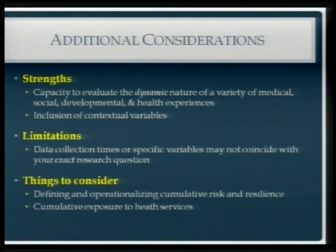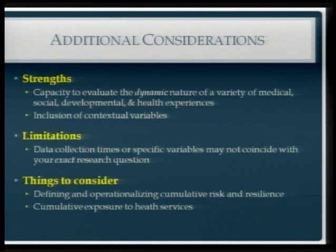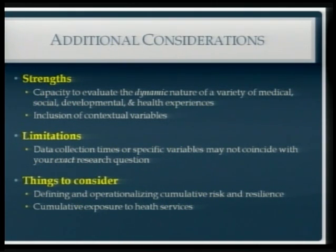Some additional considerations when thinking about these cohort studies: these data have a lot of strengths compared to most cross-sectional surveys. A major strength is that you can capture the dynamic nature of risk and resilience factors — medical, social, developmental, and health experiences over the life course. Many of them include contextual variables about family and school environments. Many also allow you to request zip code data, so if you're interested in community factors and their influence on child development, that is very easy to do with these data sets.